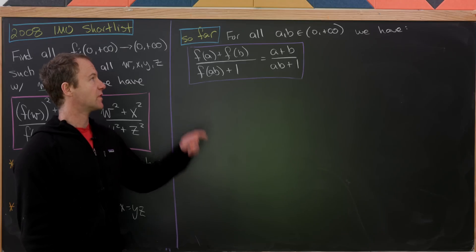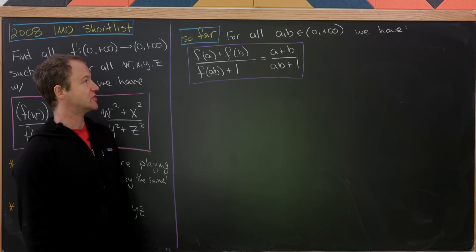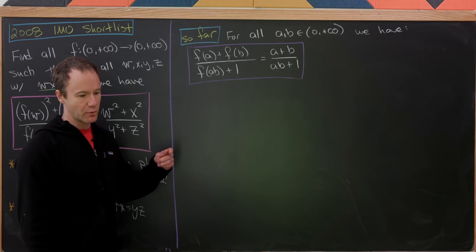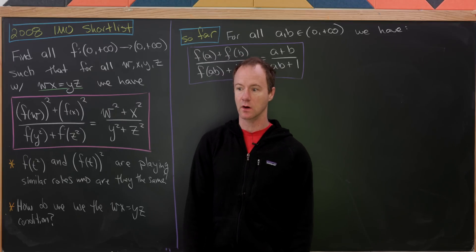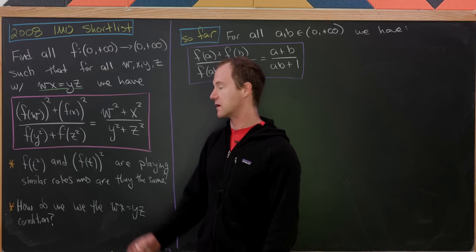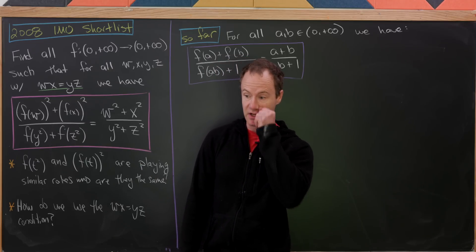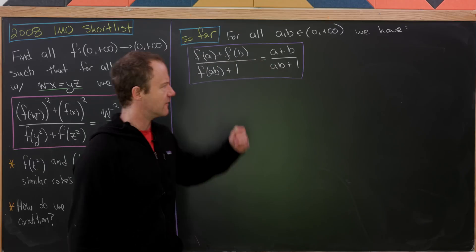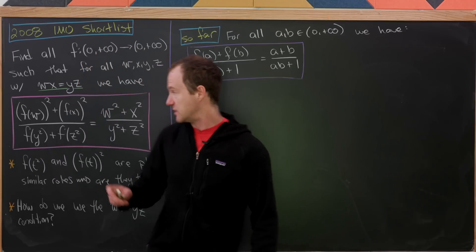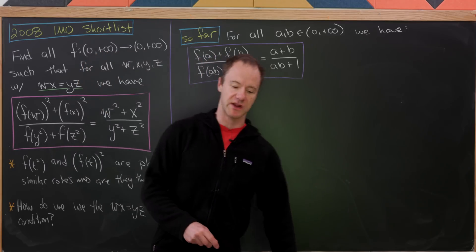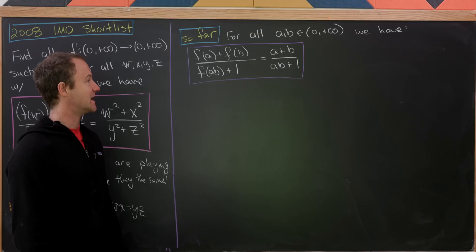So this is where we ended the last board. For all positive real numbers a and b, this equation holds. And I'd like to point out that we don't have this secondary setup equation anymore because we've reduced this from a four variable equation to a two variable functional equation.